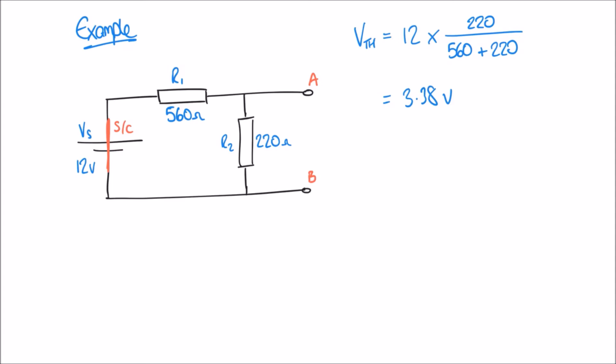Step two asks us to work out the total resistance, and we know now that the two resistors are in parallel. So we can say that our Thevenin resistance RTH is equal to 560 in parallel with 220 — that double slash is shorthand for parallel. If you're not sure how to work out two resistors in parallel, I'd recommend going back to the video on series and parallel resistors. 560 in parallel with 220 gives an answer of 157.95 ohms.